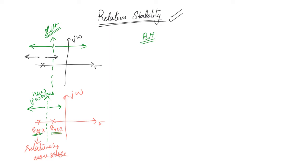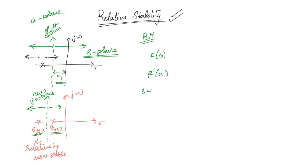For this, you have to perform a transformation. This is the S-plane, and the new j omega axis we will take to be some 'a' plane, and this shift value we will call sigma one. This means we are shifting the j omega axis by a magnitude of sigma one. So, what is the relation between s and a? The variable will initially be a function of s, and after shifting it will be a function of a. The relation is: s equals a minus sigma one. You substitute (a minus sigma one) in place of s, and you get f'(a), which is the new equation. If you apply the RH criterion to this equation, you will find the location of roots with respect to the new j omega axis.